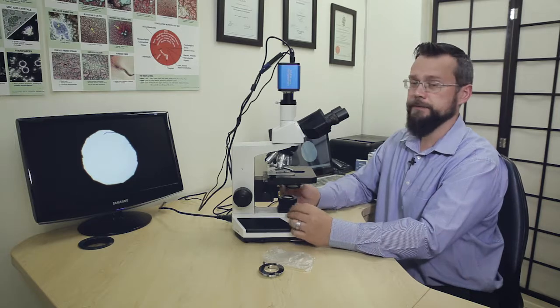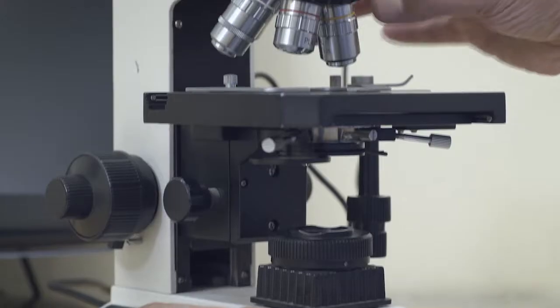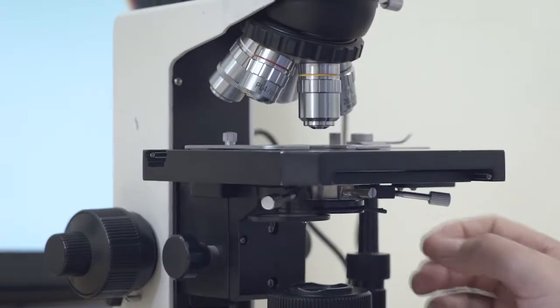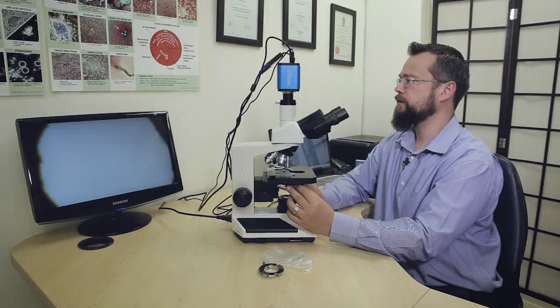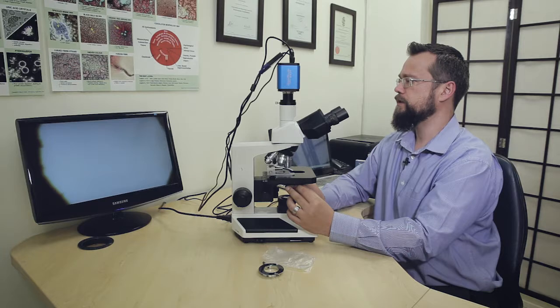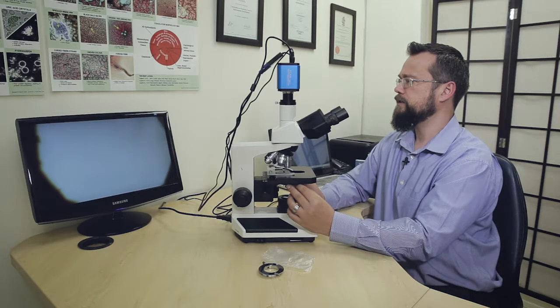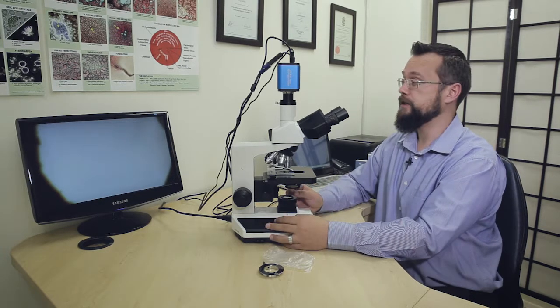To ensure that it's properly centered, you can increase magnification going to the 10 times objective. Adjust the centering knobs until the circle of light is completely in the middle of the viewing field as we have it there.